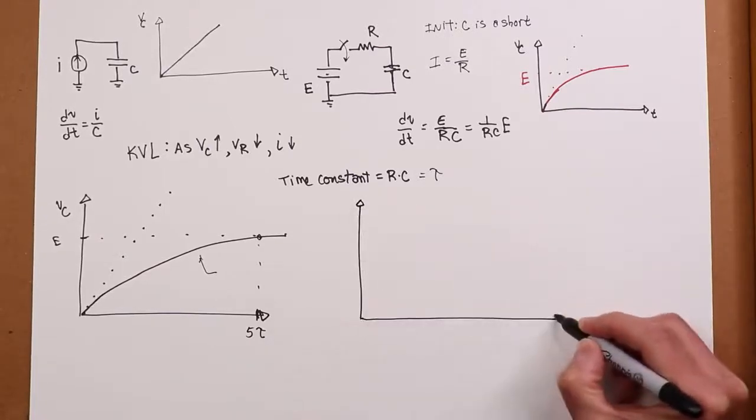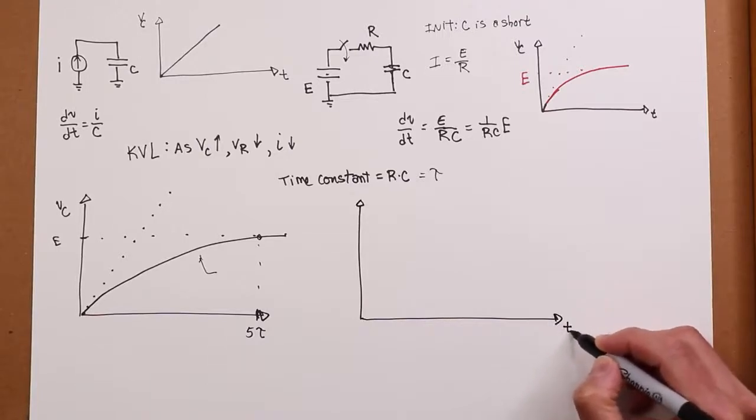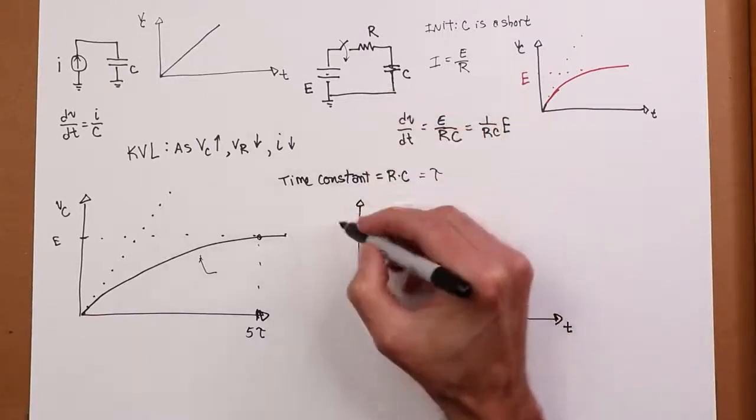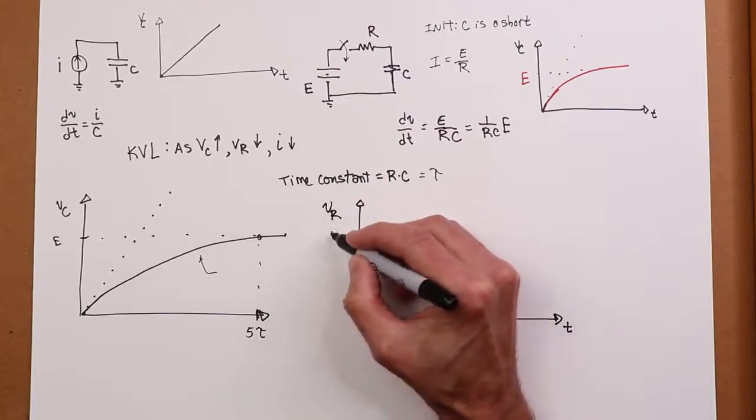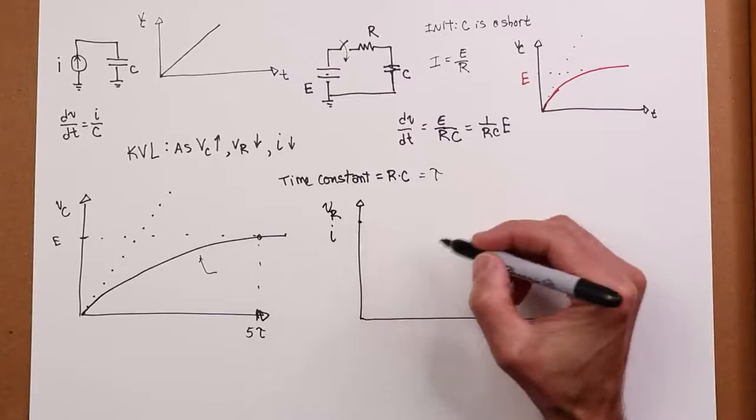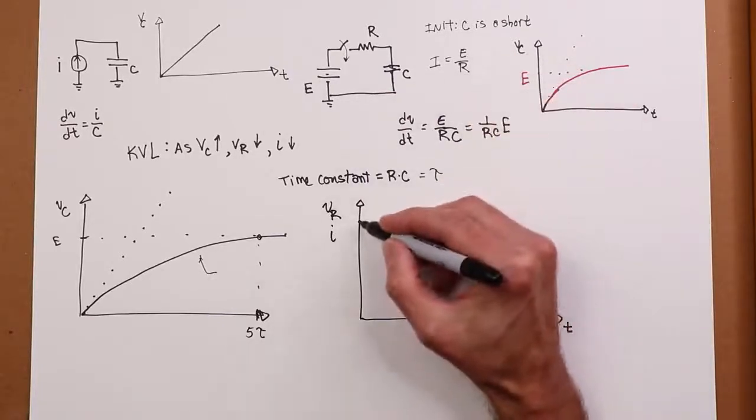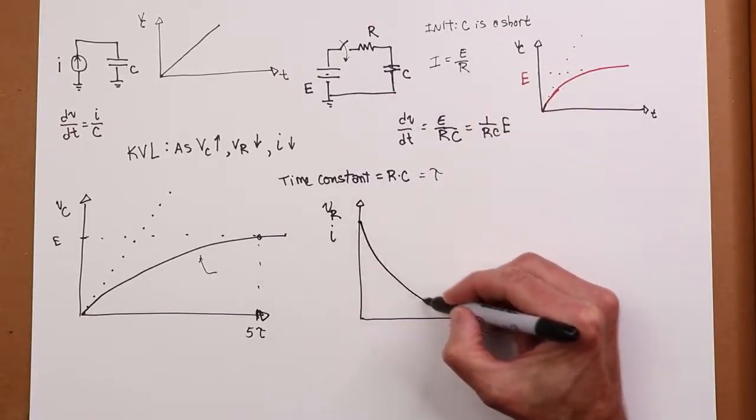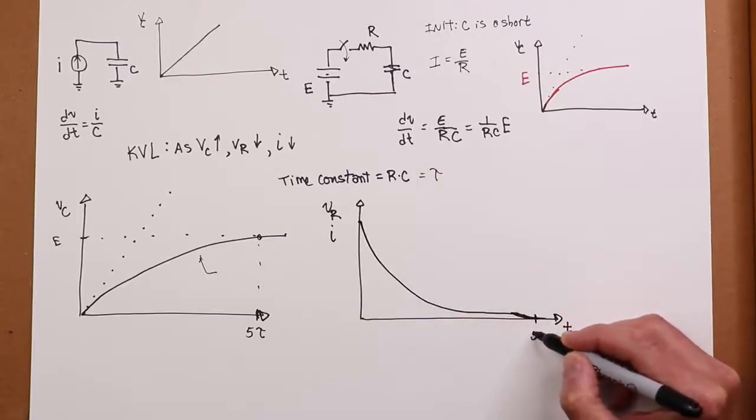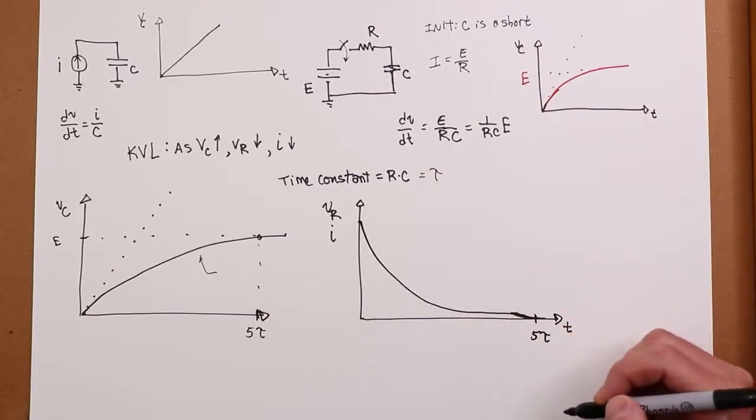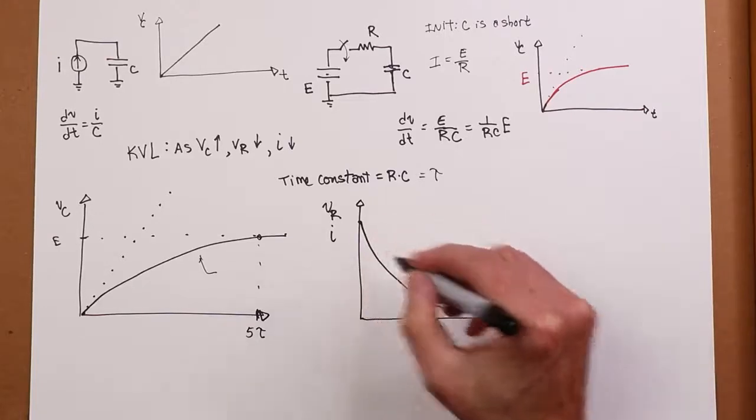So as I mentioned, this would be the resistor voltage or the current that's going to start at some max value, like in this case, E over R, and then drop down like this. So we're going to get the five tau down here. It's going to be virtually zero.